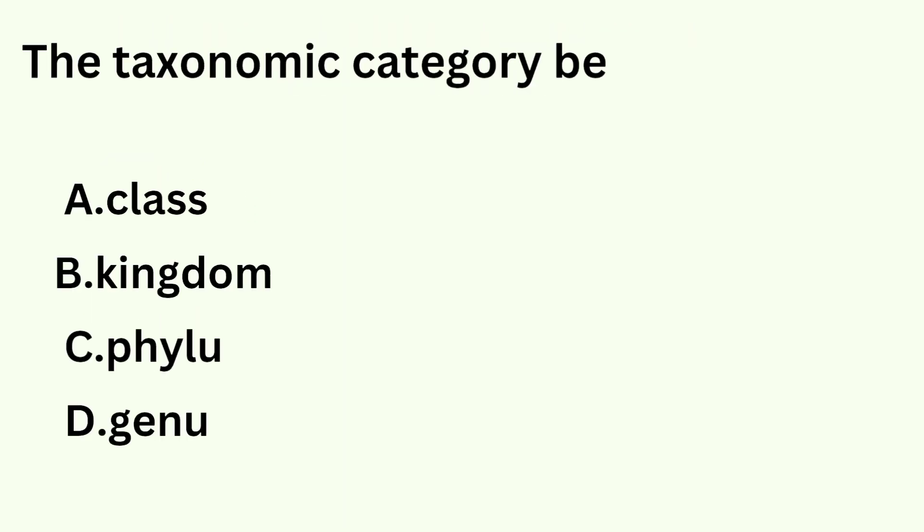The taxonomic category below the level of family is: A. Class, B. Kingdom, C. Phylum, D. Genus.